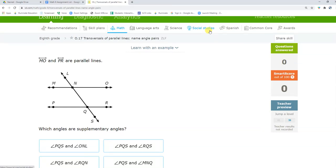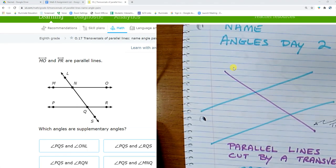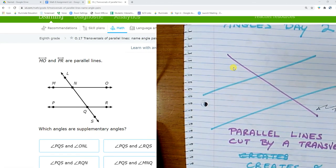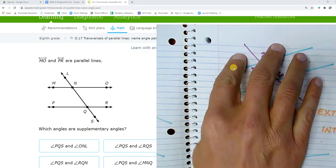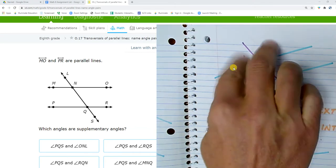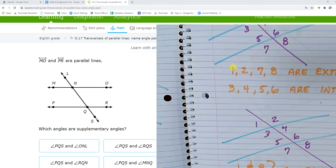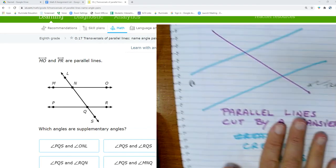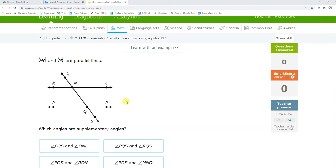All right, this is Mr. Barr and this is transversals of parallel lines named angle pairs. I highly recommend that you have taken the notes. We talked about what parallel lines and a transversal create - eight different angles. We know that we have things called alternate exterior angles and interior angles, alternate exteriors and alternate interiors, and we also have corresponding angles. So if you haven't already watched that video and taken the notes, that would be helpful.